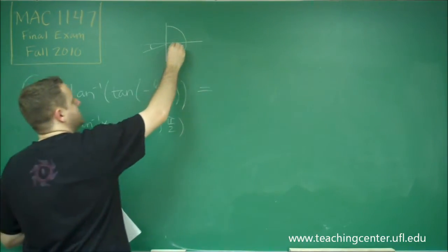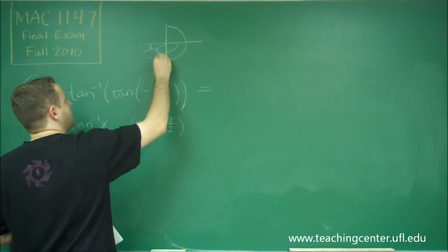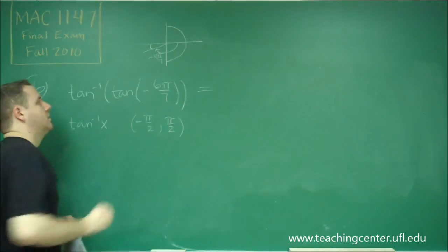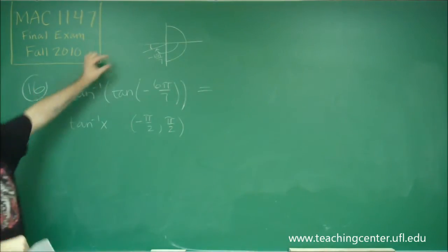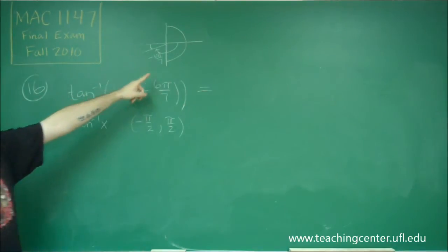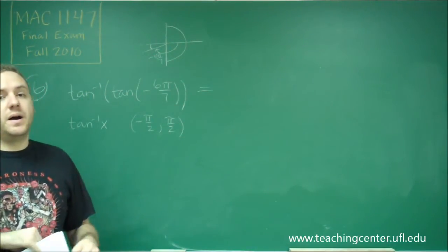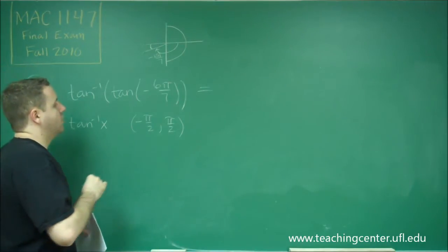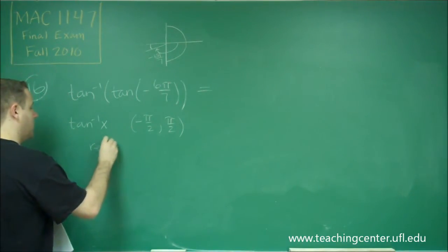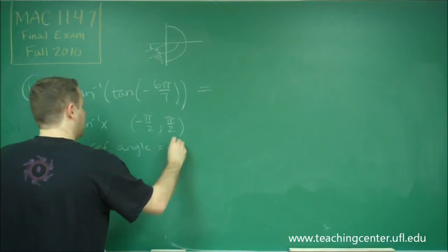So if this whole distance right here, this angle, is negative 6 pi over 7, then that part that must be left, in other words, the reference angle, has to be pi over 7, because this whole thing would have to be 7 pi over 7, because that would give you pi. So our reference angle here is pi over 7.